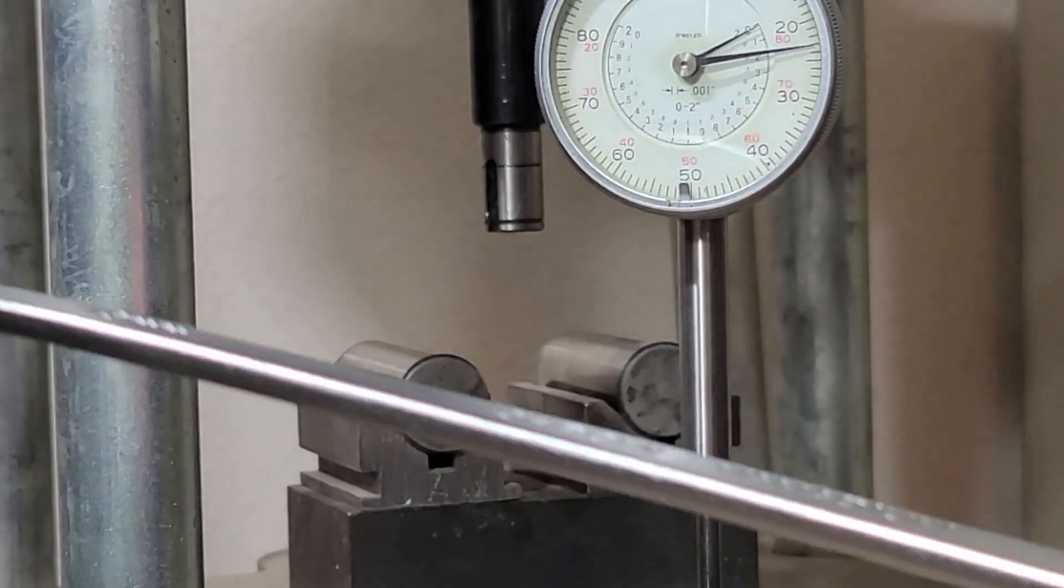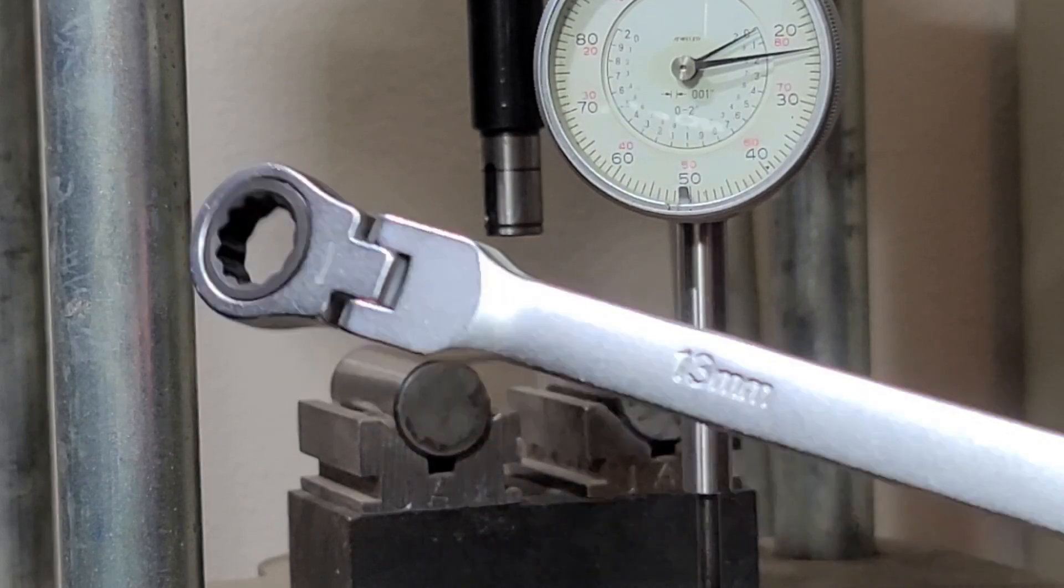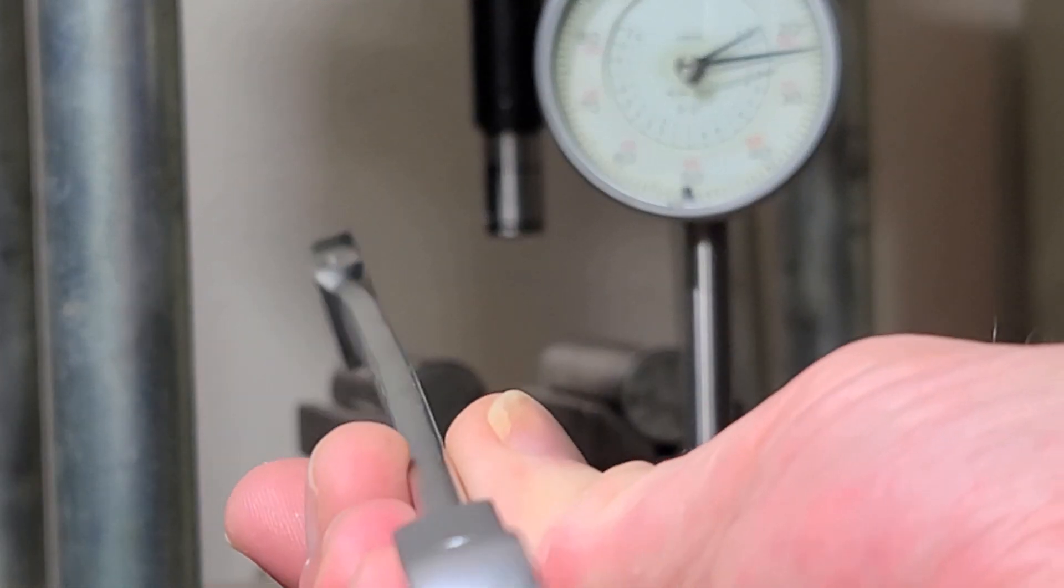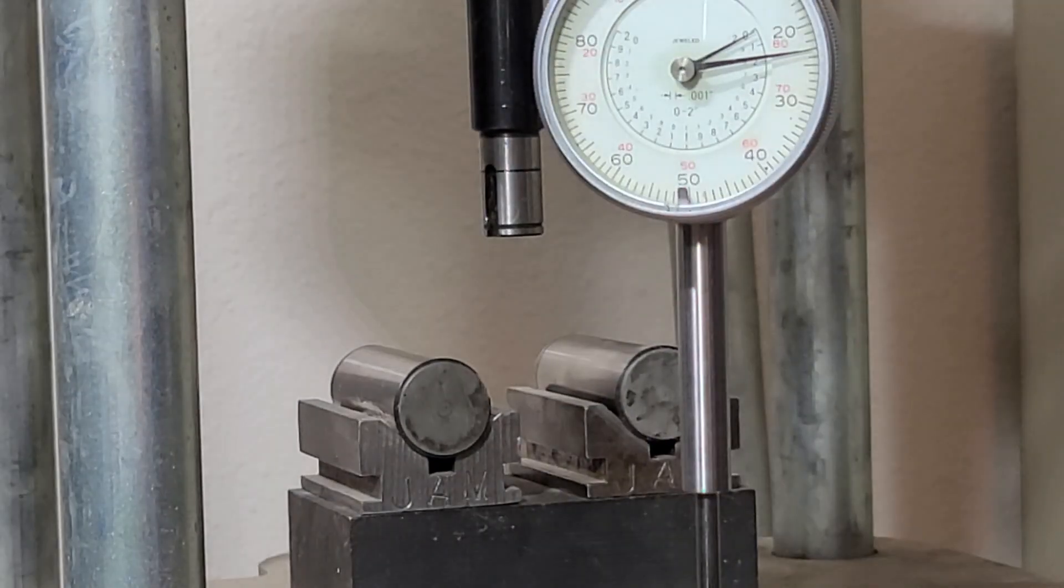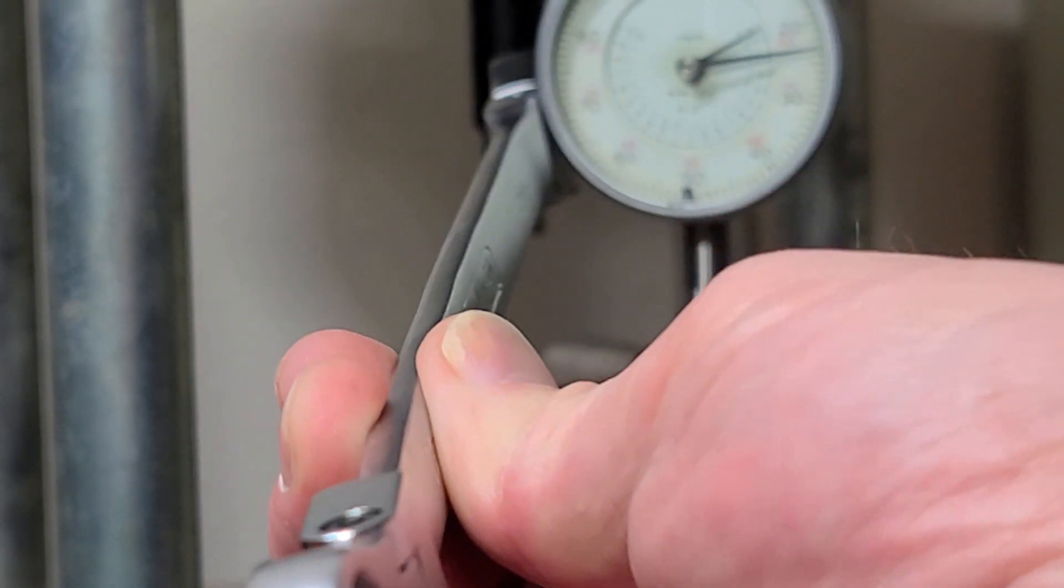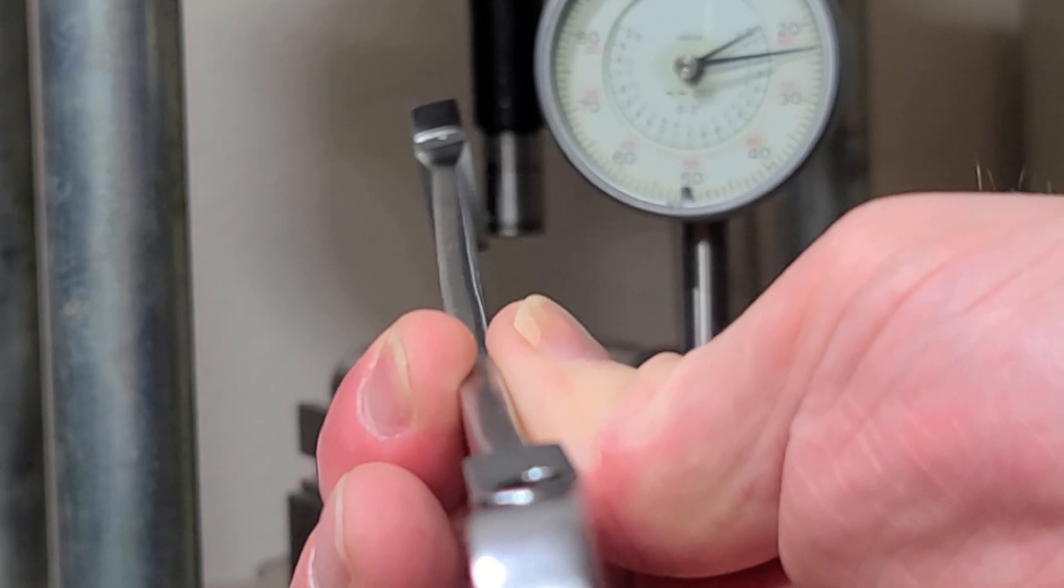I got a set of these Orion Motor Tech Amazon ratcheting box wrenches and they were just terribly bent. You can see right here at the end, right where my fingers are, there is a pretty steep bend but then the whole wrench is curved.